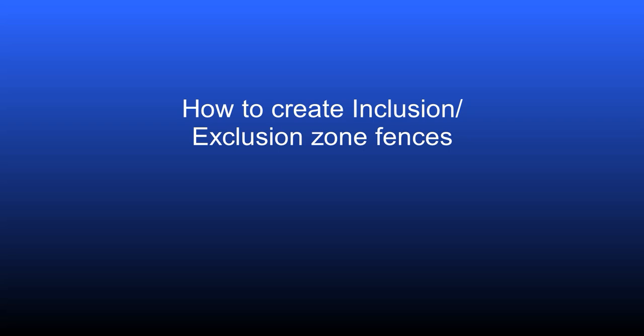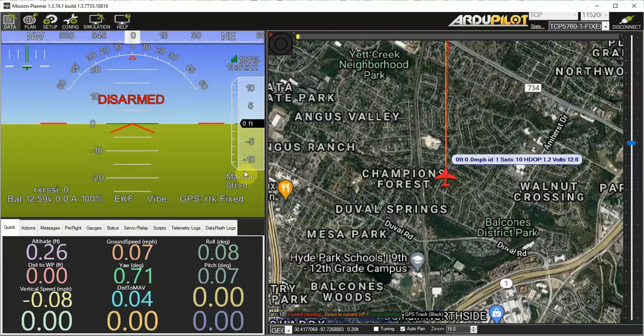This video is about how to create inclusion zone and exclusion zone type fences in ArduPilot. These fences can be either polygonal or circular and can be used in addition to the simple tin can home base fence.